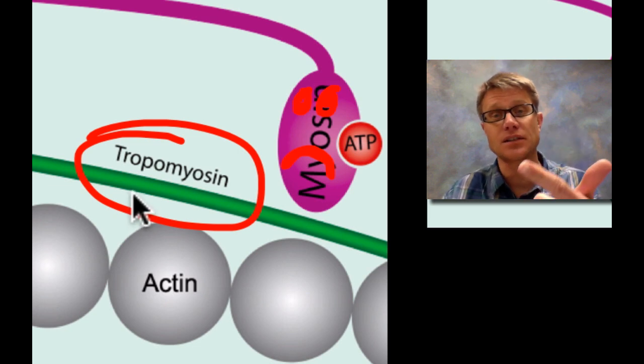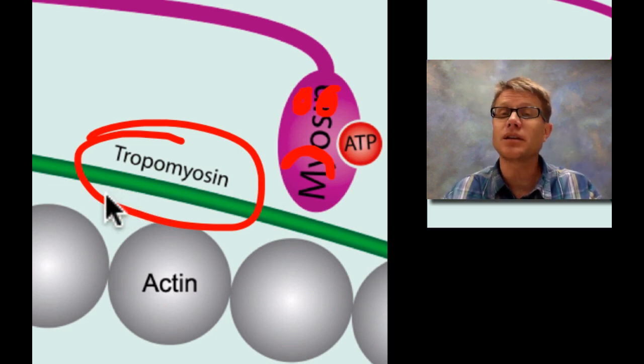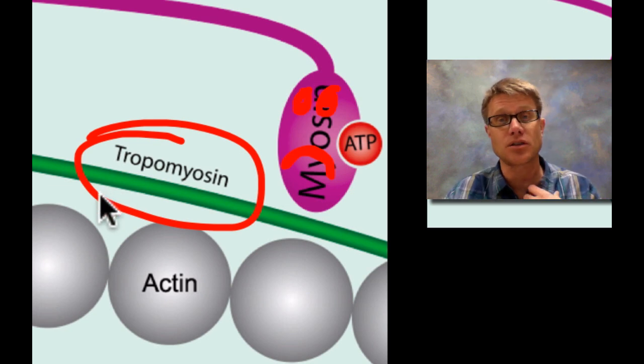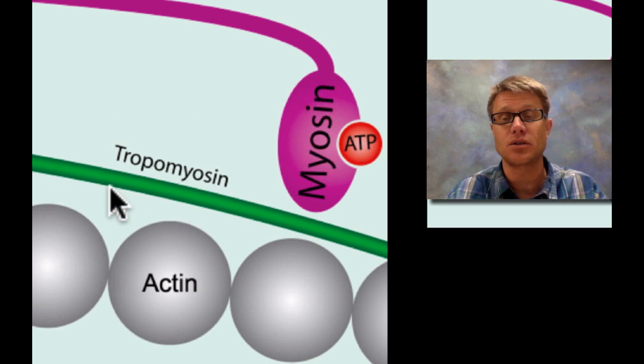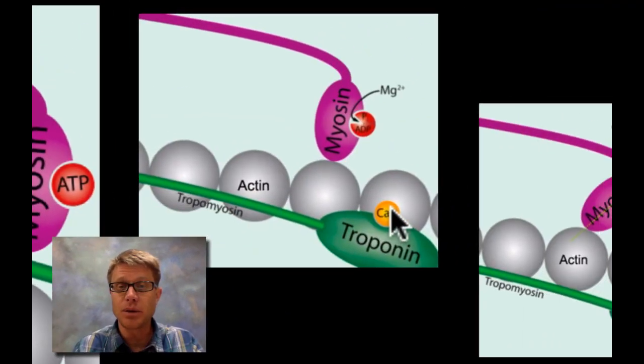We need access to actin. And to get that access we need something called calcium. And so basically that calcium is going to be provided by release from action potential nerve signals that are coming down to fire off that muscle. So basically what the calcium will do is the calcium will grab on to this tropomyosin and basically it's going to move that block out of the way.